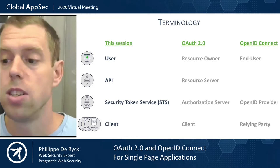If you're familiar with OAuth and OpenID Connect, you may have noticed that I'm using different terminology than you might read in the specifications. One reason is that the terminology in the specs is often very broad because it allows various scenarios which are not relevant for single page applications contacting APIs. Also, OAuth and OpenID Connect use different terms, so swapping between both would be a nightmare to follow. That's why I'm using users, APIs, clients, and a security token service in this session. On the right, you can see what that translates to in the OAuth or OpenID Connect specs.